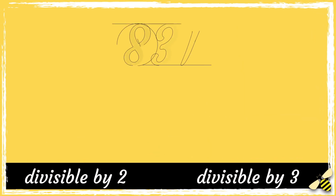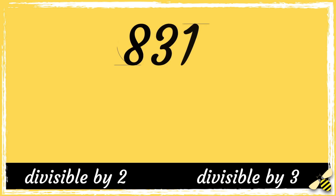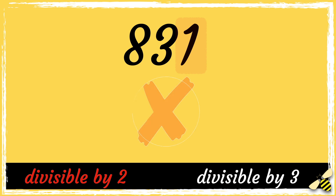Now we have 831. First let's see if this number is divisible by 2. The last number is not an even number, so it's not divisible by 2. I don't need to carry on — if it's not divisible by 2, then it's definitely not going to be divisible by 6.